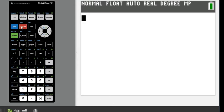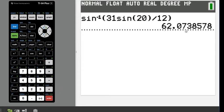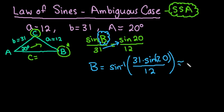So what we're going to do is we're going to find the angle B by doing second sine 31, sine 20. Make sure you close your parentheses behind sine 20 because you will get the wrong answer if you forget to do that. Divided by 12. And we get 62.07 degrees. So we know for sure that there's at least one triangle that can be formed because we got an answer here.